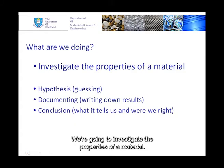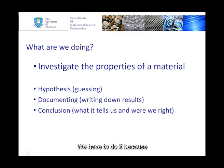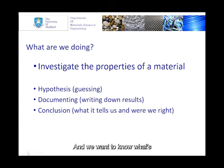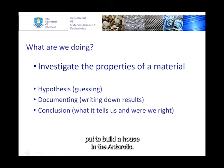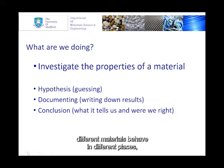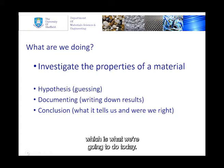So what are we going to do? We're going to investigate the properties of a material. Material scientists do this a lot because different materials behave differently in different environments, and we want to know what's the best material to use in certain circumstances. For example, you wouldn't use the same material to build a house in the Sahara Desert as you would to build a house in the Antarctic. So we need to look at how different materials behave in different places, different environments, different temperatures — which is what we're going to do today.